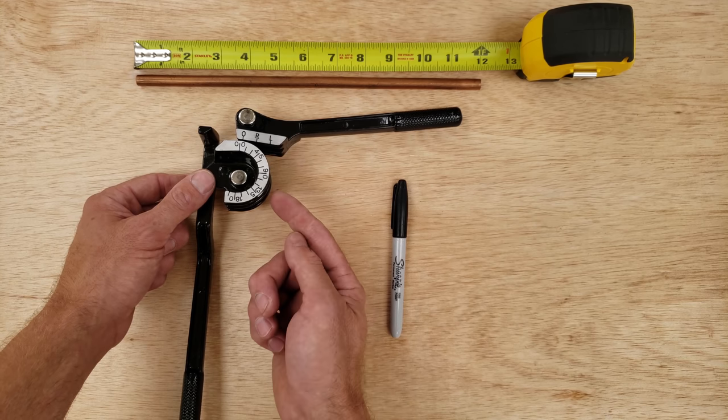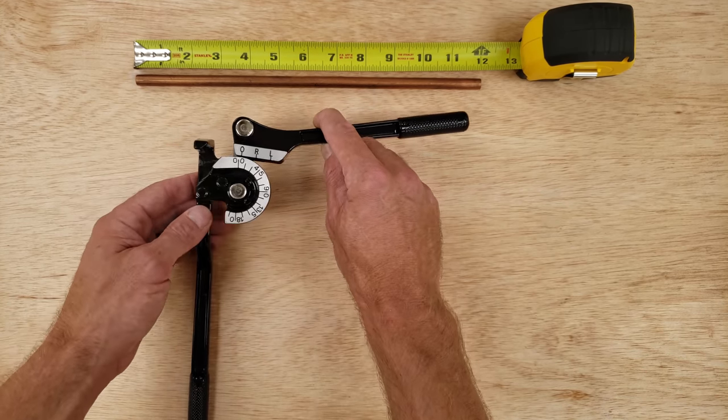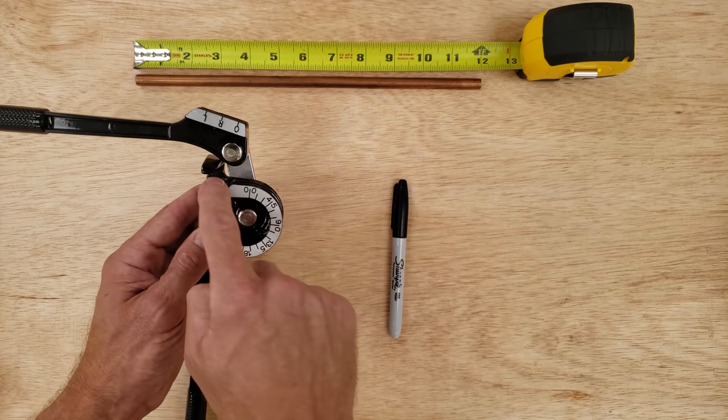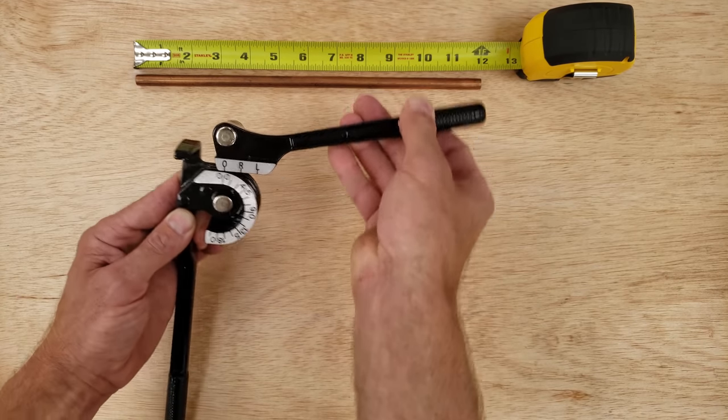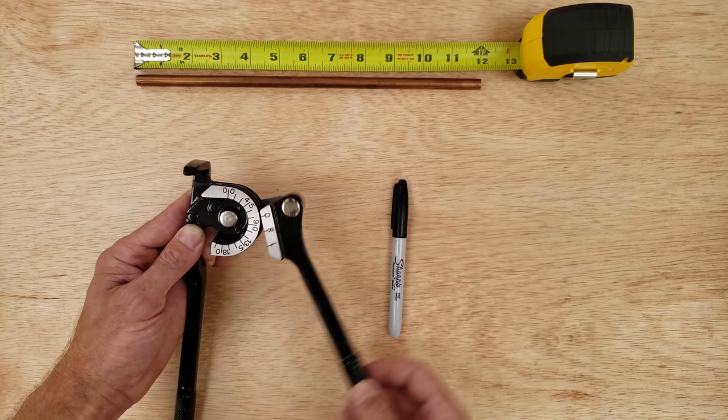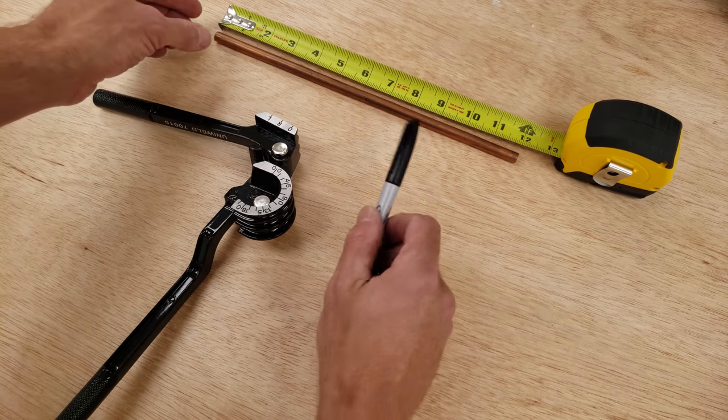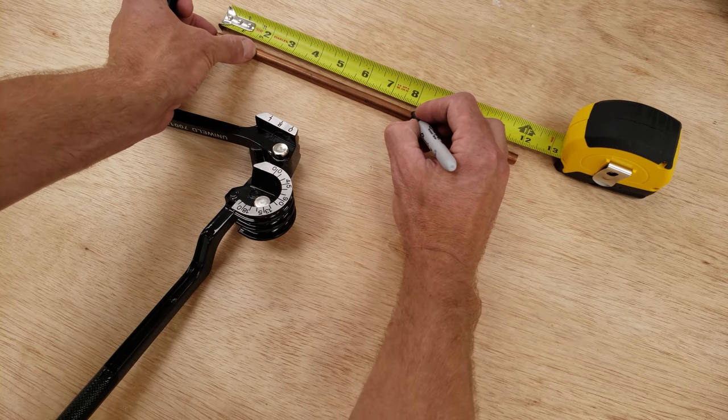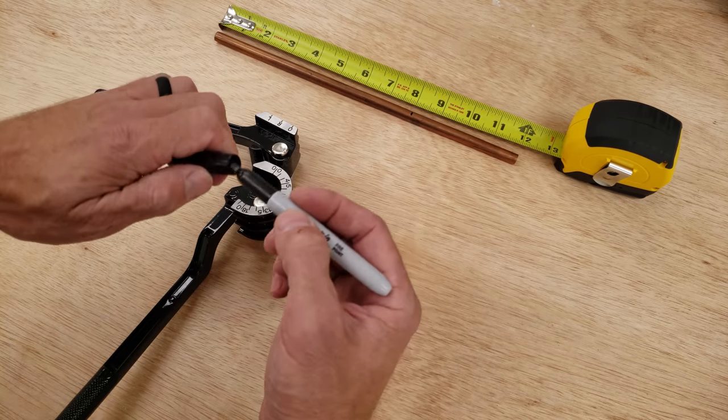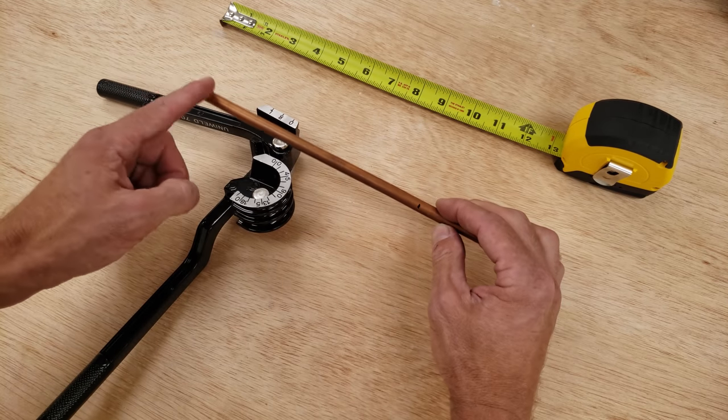Here we have our uniwell lever style tubing bender, and this is a quarter inch, 5/16, 3/8. What I want you to know about this is over here is where your tubing is coming from, and wherever you position this handle is where your tubing is going to bend to. For instance, if we need to make a 90 degree angle turn at eight inches, we're going to mark this at eight inches. This is 3/8 OD soft copper tube.